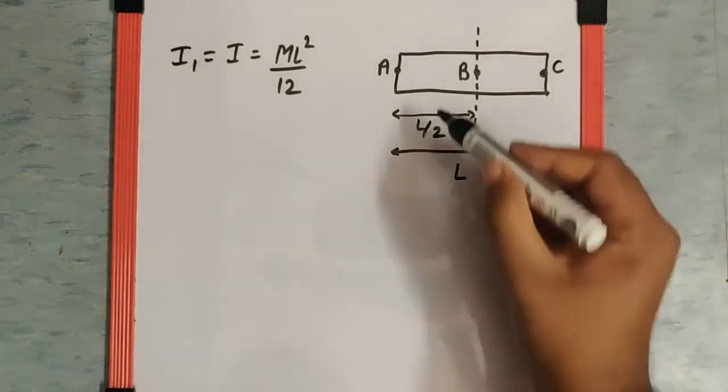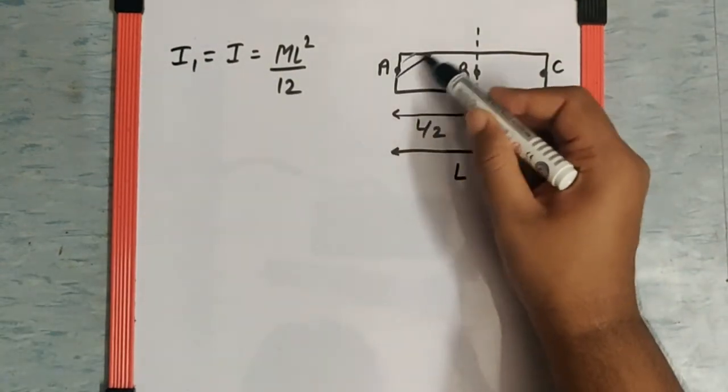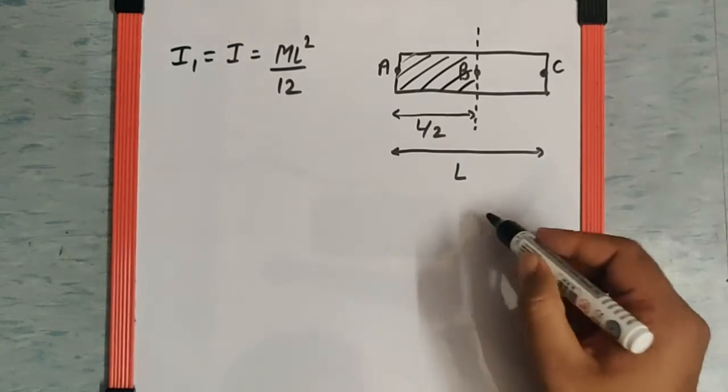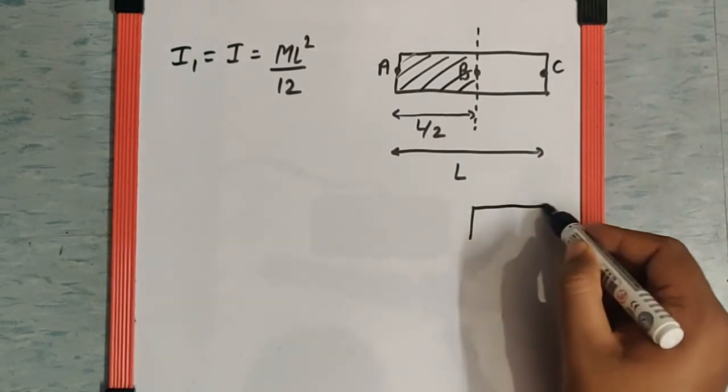Now this part AB is cut off, so if this part is cut off we are left with only the part BC.